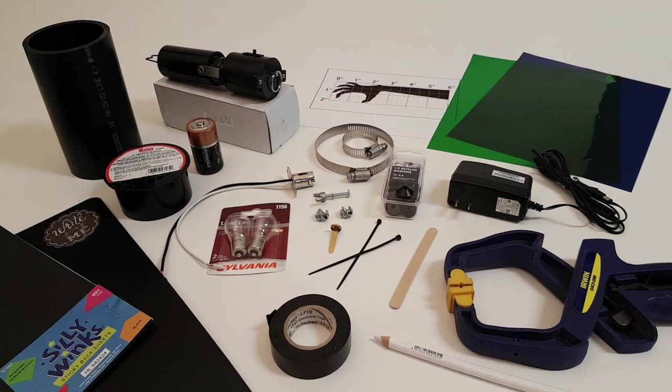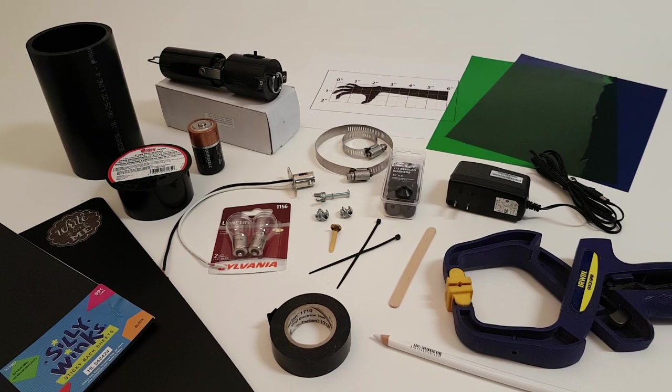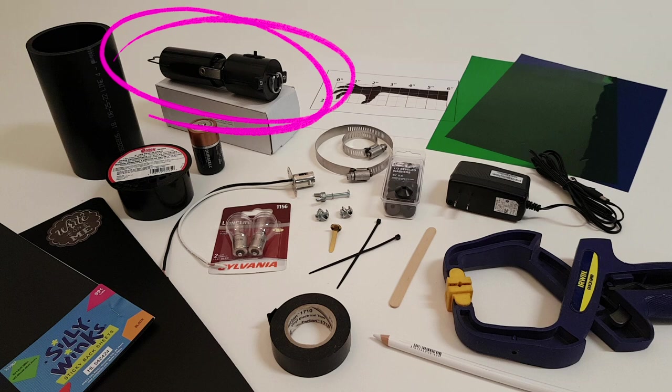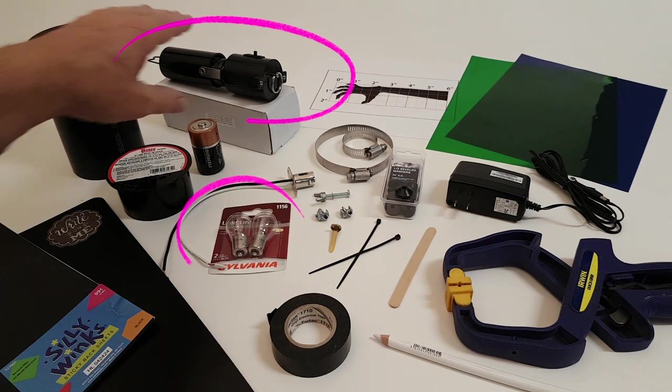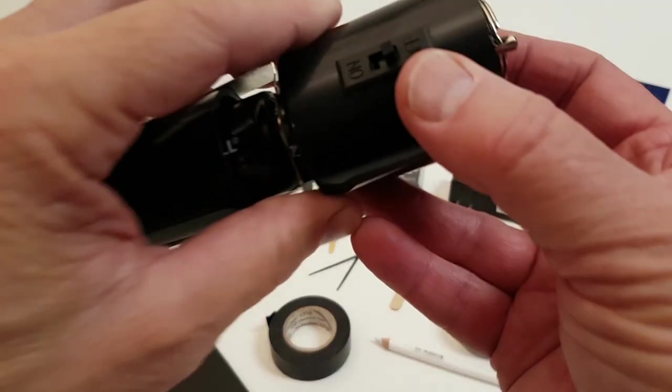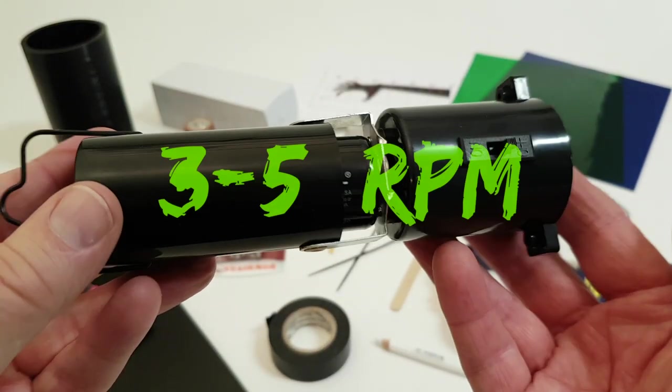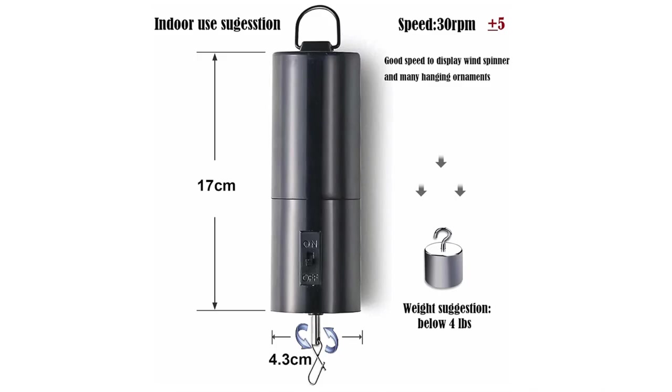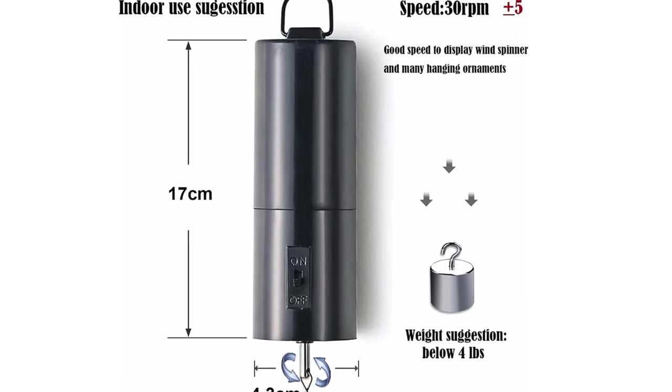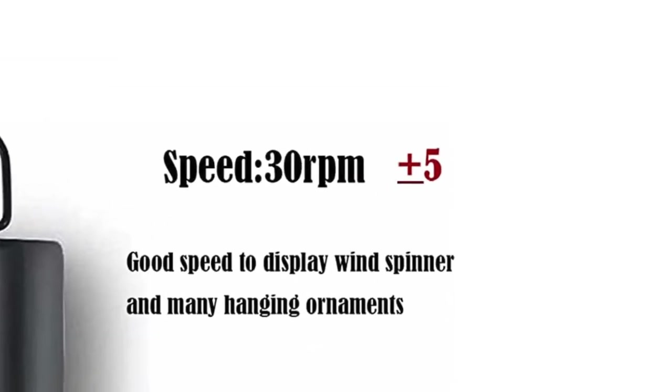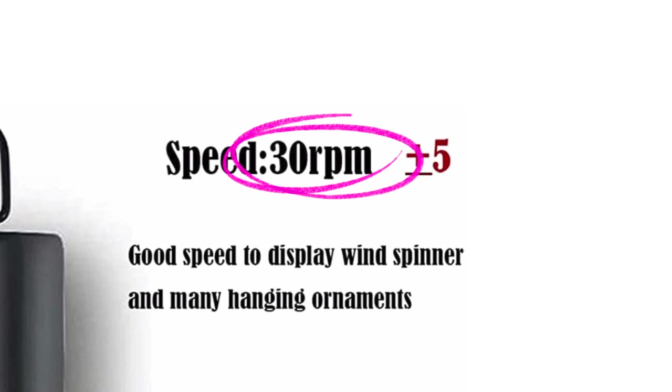The two crucial components to this visual effects prop are the rotating motor and the light source. For the motor, you will need a slow rotating motor that has a speed between three to five revolutions per minute. The one I'm using rotates at about three RPMs. Be careful, many motors may look similar but rotate far too quickly. Using those will result in a hand shadow that will speed past in a blur.